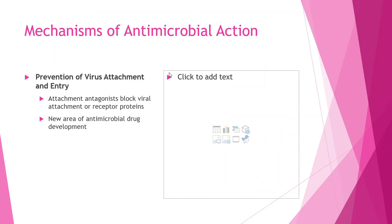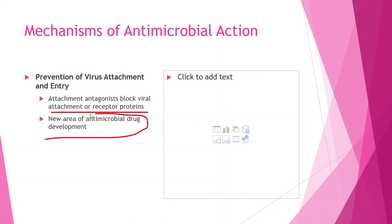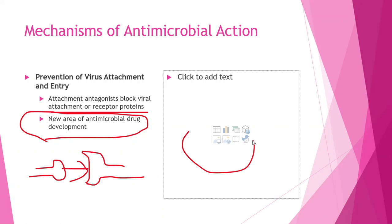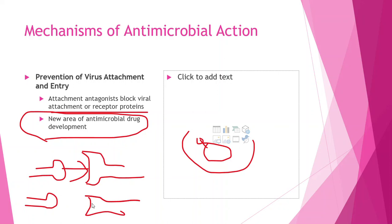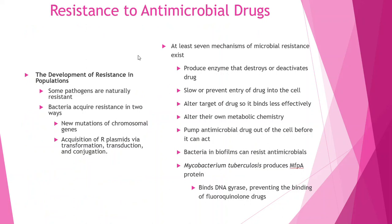Prevention of virus attachment and entry: attachment antagonists block virus attachment to receptor proteins. Viruses have spikes and cells have receptor proteins — when the spike fits the receptor like a key in a lock, it triggers endocytosis and brings in the bad guy. If we block that receptor, nothing happens. This is a promising area because we really don't have much in the way of antivirals, and what we do have is just so-so.